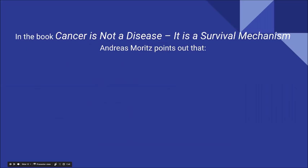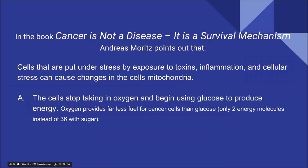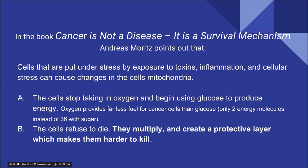In the book Cancer Is Not a Disease, It's a Survival Mechanism, Andreas Moritz points out that cells put under stress by exposure to toxins, inflammation, and cellular stress can cause changes in the cell's mitochondria. The cells stop taking in oxygen and begin using glucose instead to produce energy. Oxygen provides only 2 energy molecules versus 36 with sugar — a rapid feeding frenzy for damaged cells. If cells refuse to die, they multiply and create a protective layer, making them even harder to kill.